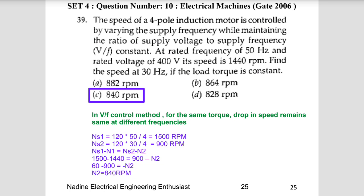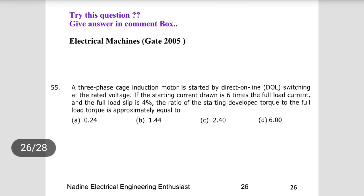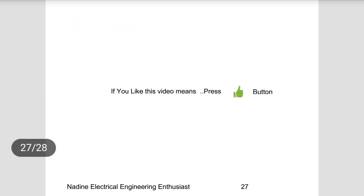A hint for a practice question: a three-phase cage induction motor started by DOL switching at rated voltage draws starting current of six times full load current, with full load slip of 4%. Find the ratio of starting torque to full load torque — answer will be provided in the next set. If you like this video, press the like button and all the best for your examination. Thank you.